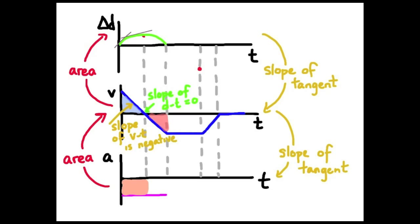For the third time interval on the VT graph, there's a constant negative velocity, so the slope of the position-time graph should be negative — a straight line sloping downwards. Finishing the AT graph: third segment velocity is constant so acceleration is zero; fourth segment velocity has a positive slope so acceleration is positive; the last segment velocity is zero so acceleration is zero. The acceleration-time graph is now complete.